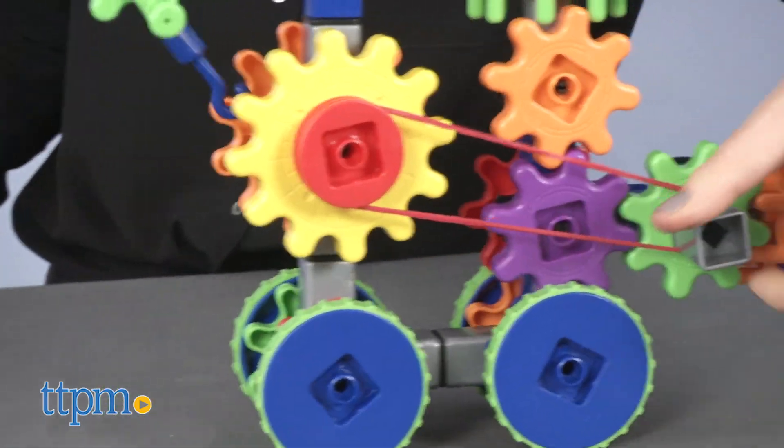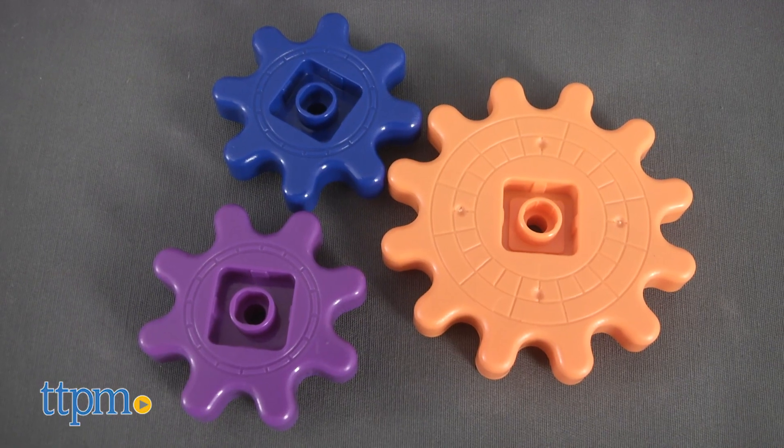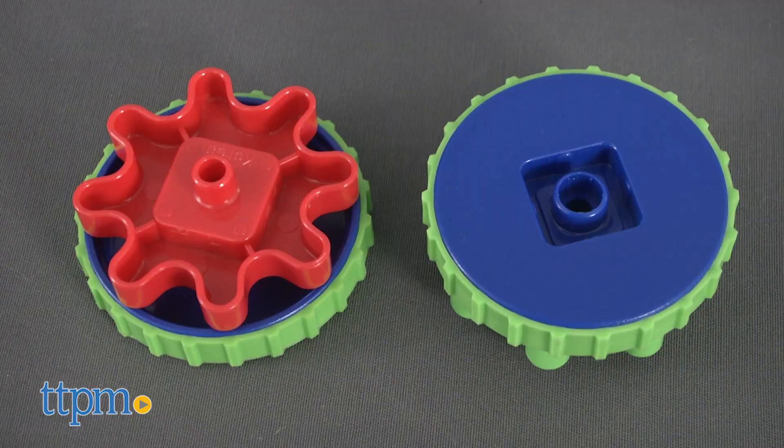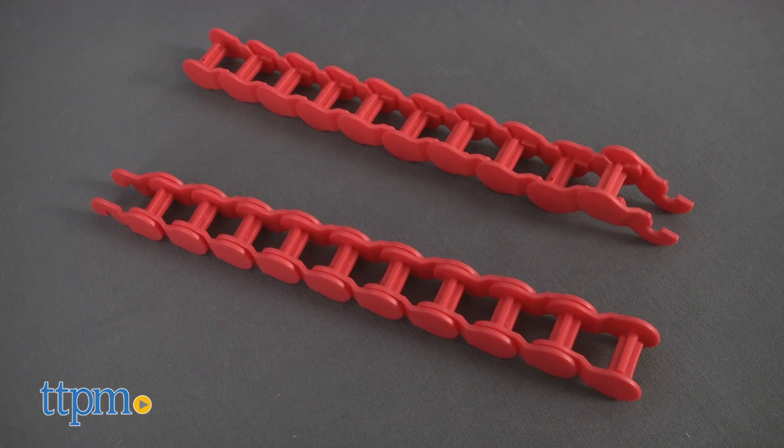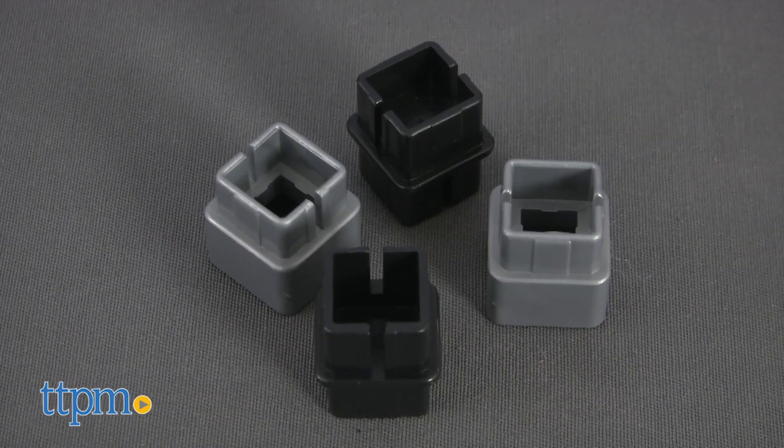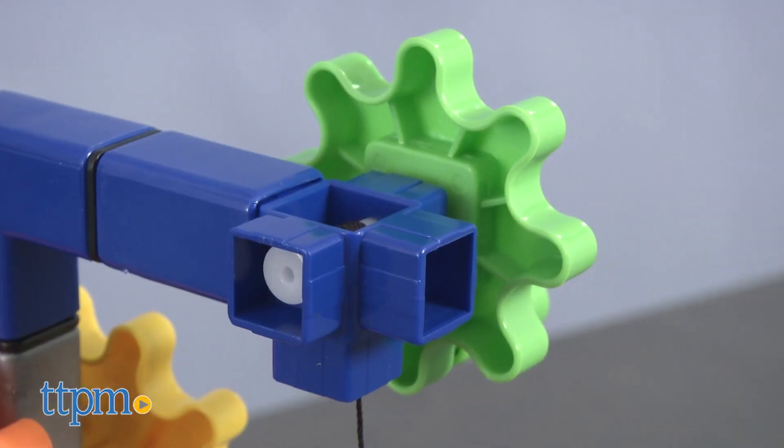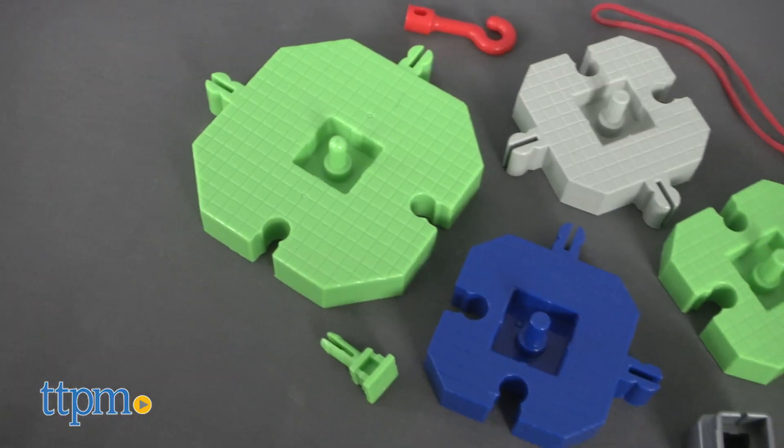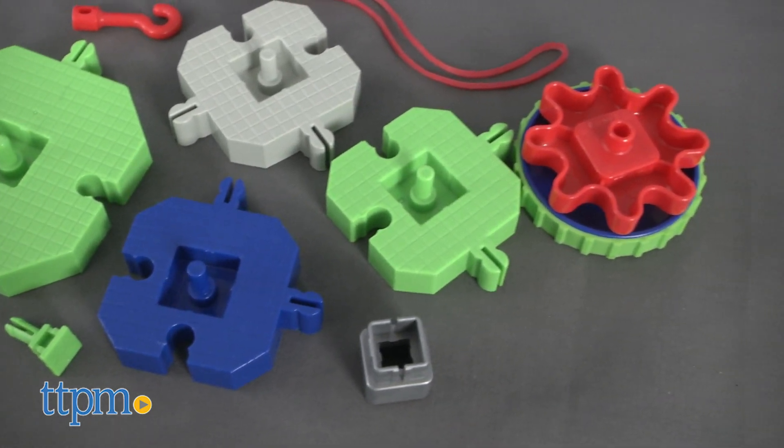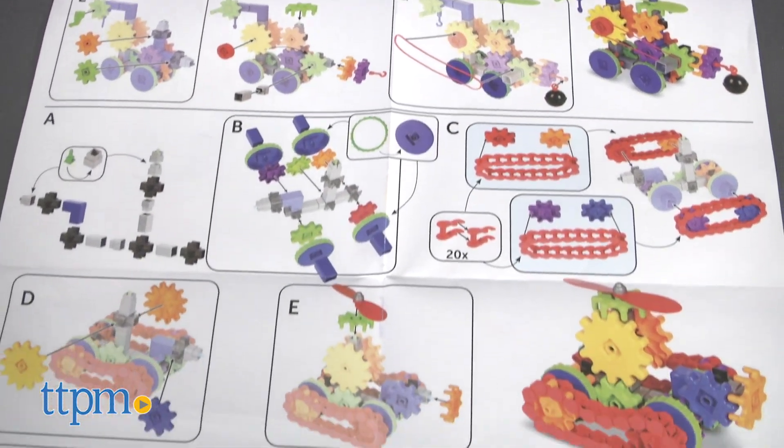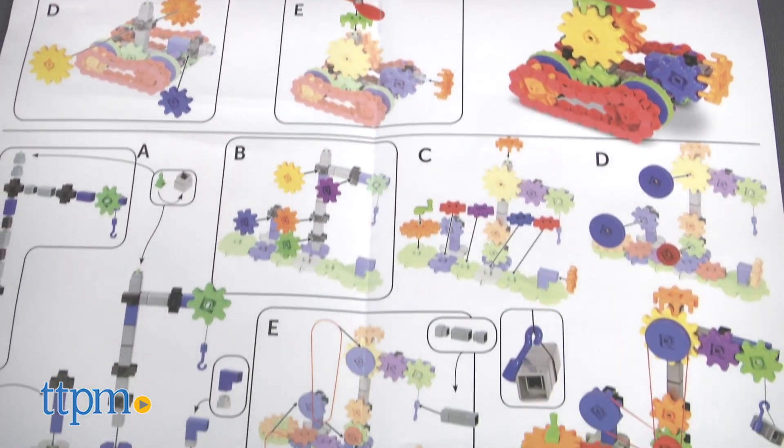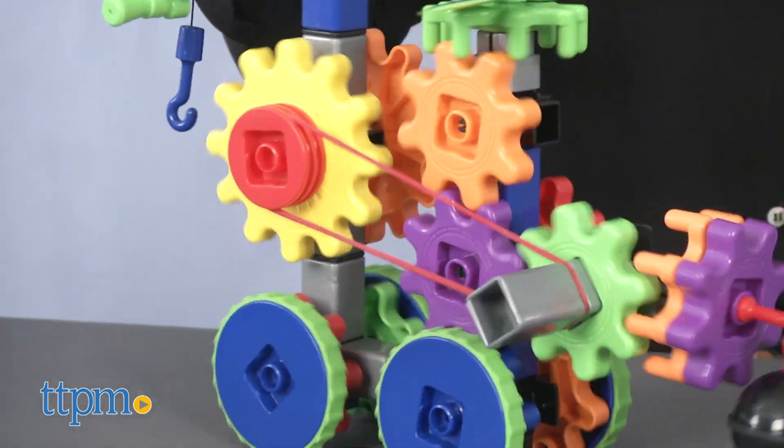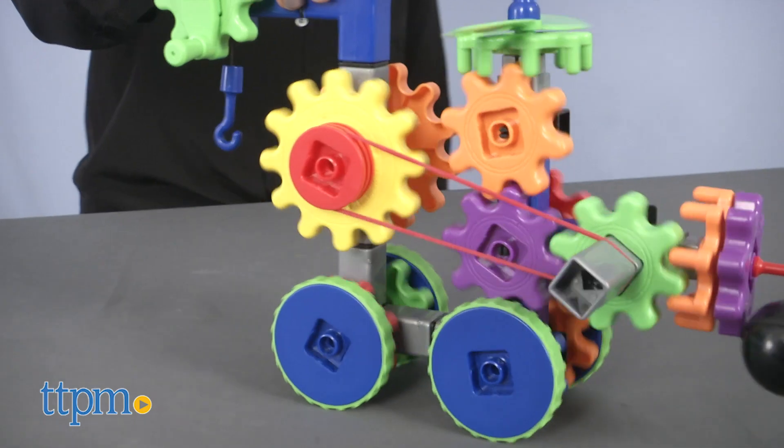Five and up. The 116 pieces include colorful plastic gears, wheels, treads, axles, pulleys, a wrecking ball, a propeller, and more. Kids can create different interactive machines and vehicles. There are illustrated instructions for three models, including the one we've built here, though some five-year-olds may need help from an adult.